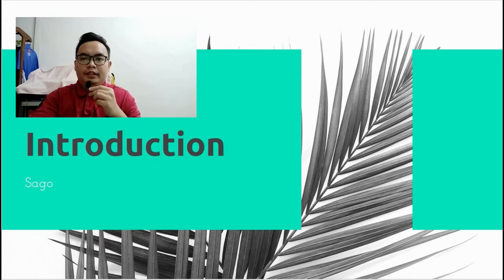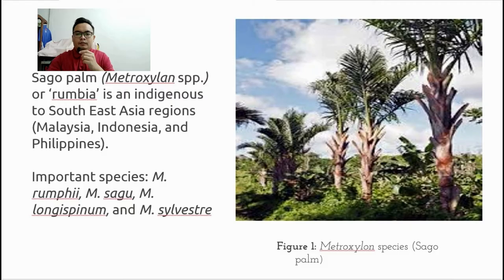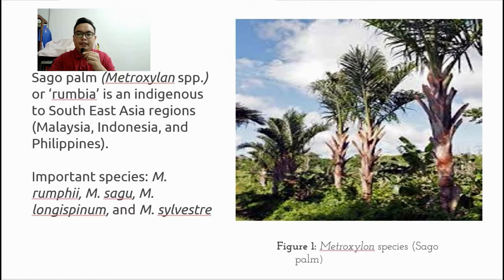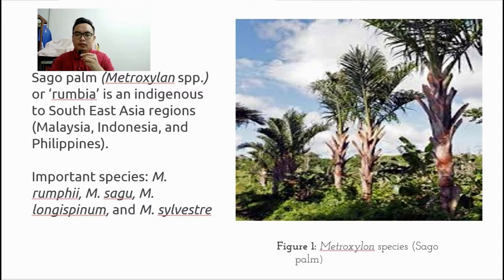First, introduction of Sago. As you can see on the figure, it shows Metroxylon species, which is locally known as Rumbia. Rumbia is indigenous to South East Asian regions such as Malaysia, Philippines, and Indonesia. Some important species used in Sago production include Metroxylon Rumphii, Metroxylon Sagu, Metroxylon Longispinum, and Metroxylon Sylvestre.